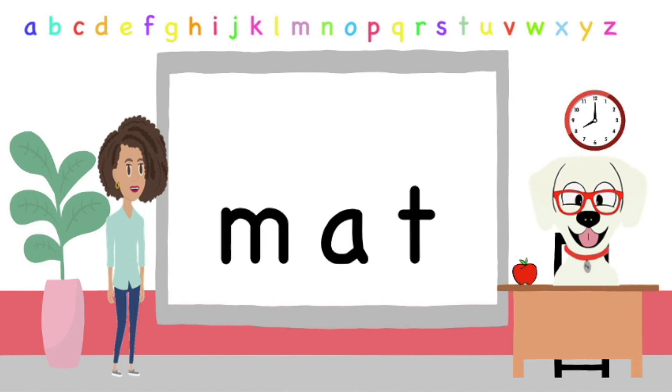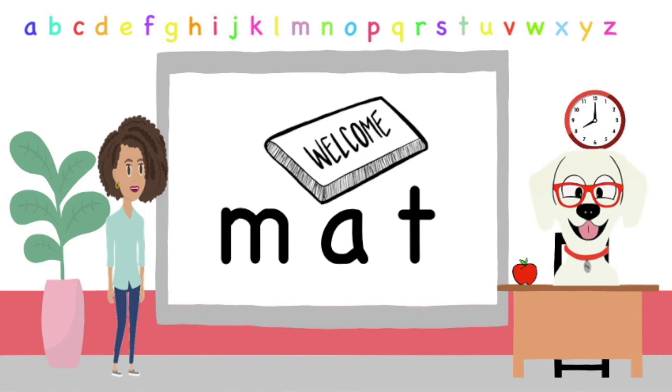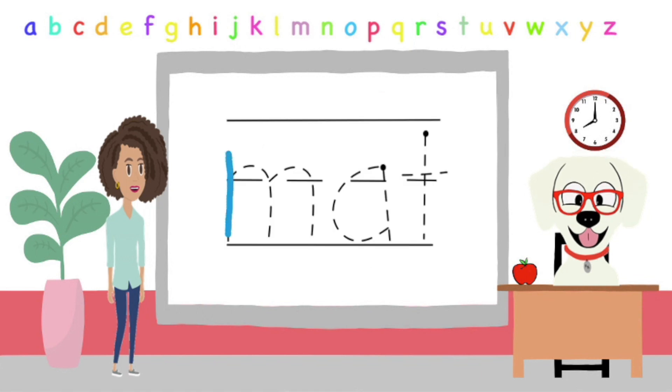We're almost done, guys. This is the last one. Here we have M, A, T, M, A, T. What does M, A, T spell? Good job! It spells mat, M, A, T, mat. Now let's write the word mat. M, A, T, mat. Great job!